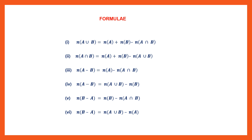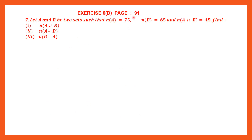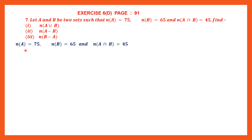Now we can begin the exercise. Exercise 6D is on page number 91 and we are with question 7. Let A and B be two sets such that the cardinal number of A is 75, the cardinal number of B is 65, and the cardinal number of A intersection B is 45. We are only being given the cardinal numbers; we don't know what the elements are. We have to find the cardinal numbers for three questions — first one is A union B. Using the formula: cardinal number of A union B equals cardinal number of A plus cardinal number of B minus cardinal number of A intersection B.